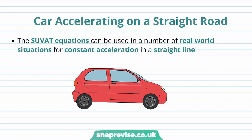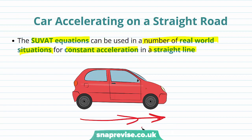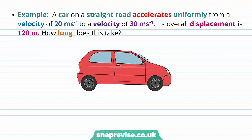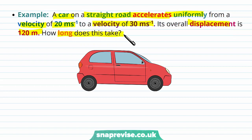The first example we're going to look at is a car accelerating on a straight road. The SUVAT equations can be used in a number of real-world situations for constant acceleration in a straight line. Here we have a car accelerating with a constant acceleration a. A car on a straight road accelerates uniformly from a velocity of 20 metres per second to a velocity of 30 metres per second. Its overall displacement is 120 metres. How long does this take?